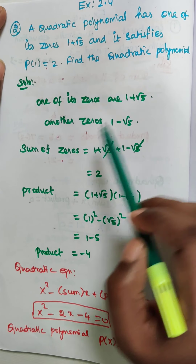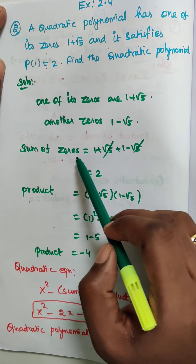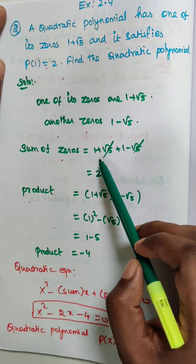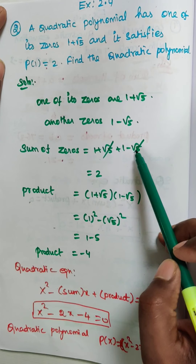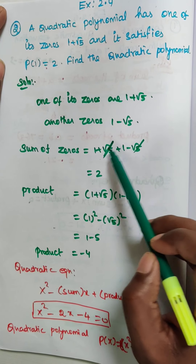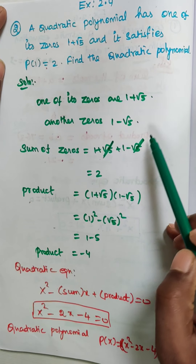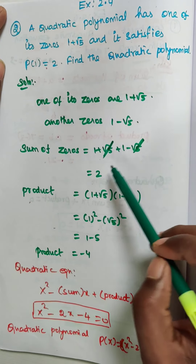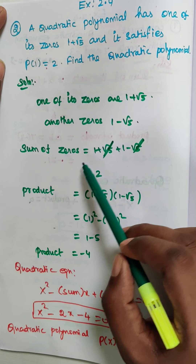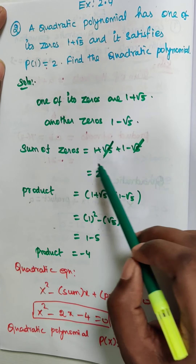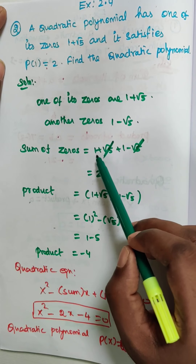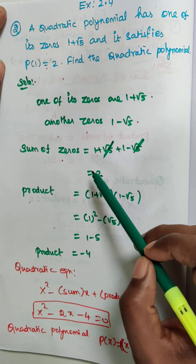So now sum of the zeros: 1 plus root 5 plus 1 minus root 5. Here root 5 and minus root 5 get cancelled. So the sum of the zeros is 1 plus 1, which equals 2.